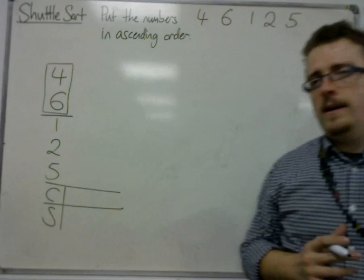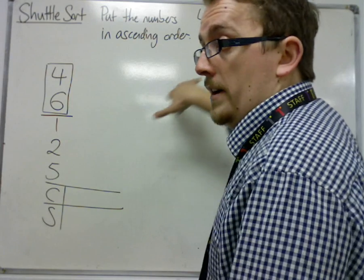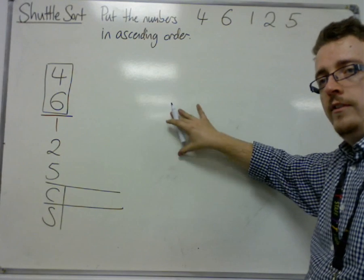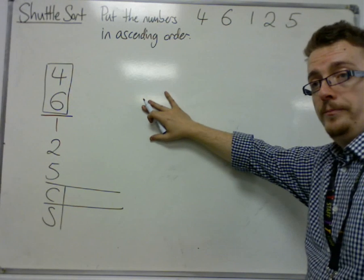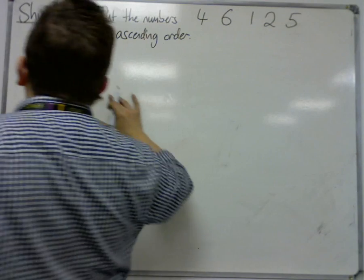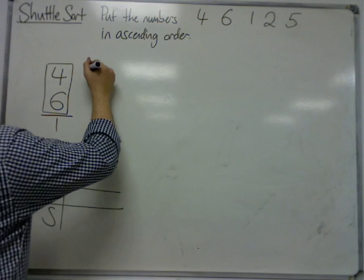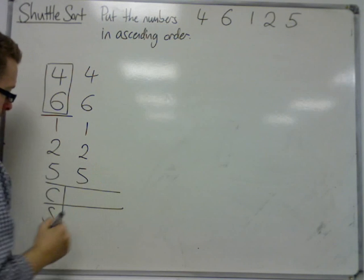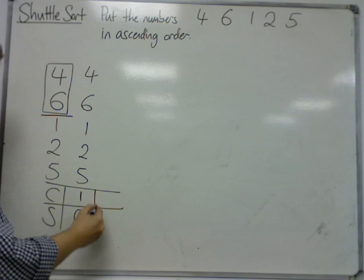Like counting all the swaps with the upwards diagonal lines in bubble sort, all the comparisons in this case for shuttle sort will be counted by the boxes. So four and six are compared first. They are in the correct order, so that's fine. Rewrite the list. One comparison was made, no swaps were made.